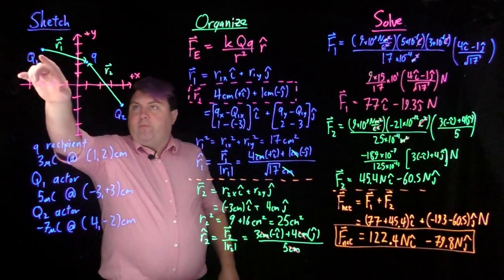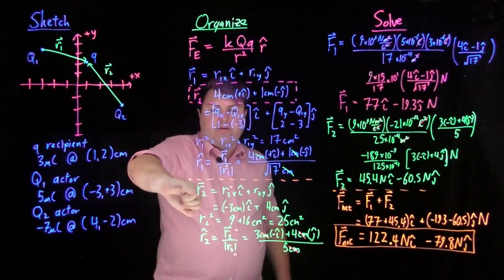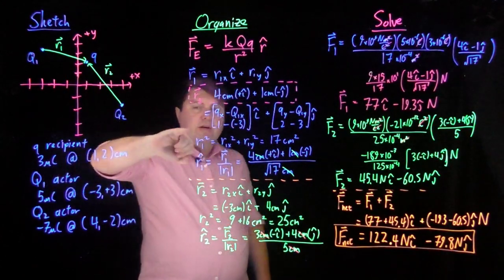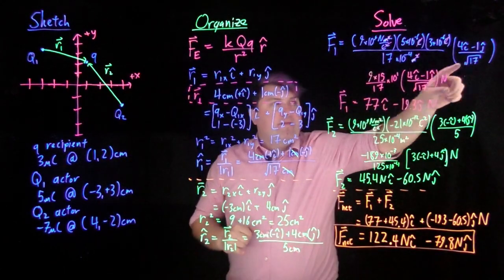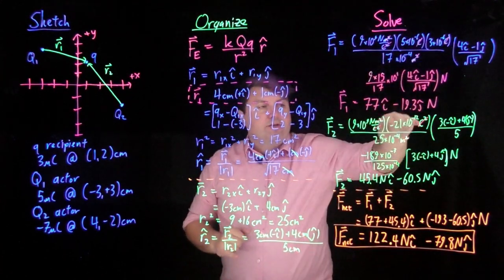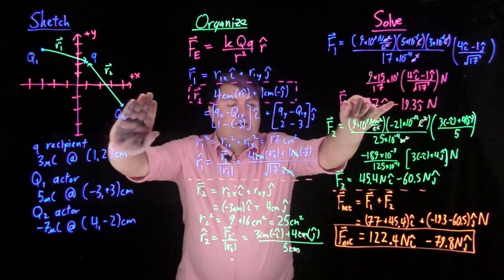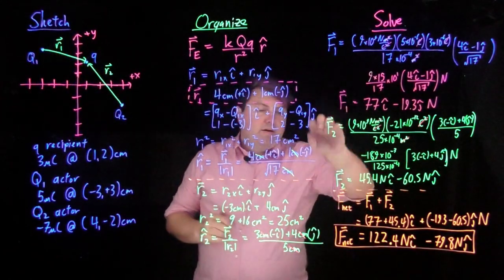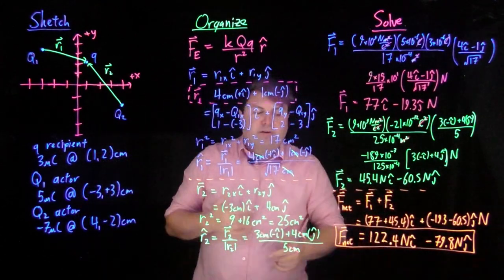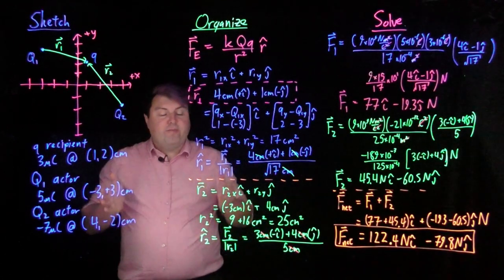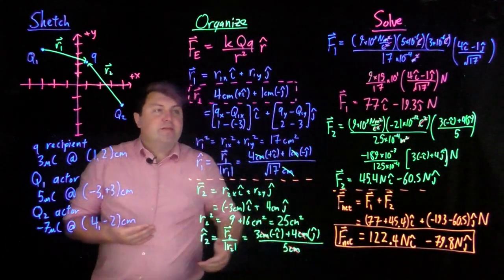So what did we do? We found individual r vectors — r1 and r2, the vector from each agent charge to the recipient. We used those to find r1 squared, r1 hat, r2 squared, and r2 hat. Then we plugged everything into Coulomb's law to get the individual forces — while computing F1, I don't care about q2; while computing F2, I don't care about q1. Once we have the two forces in component form, we just add the components. This makes it a very consistent, easy approach we can continue to use for more complicated cases.